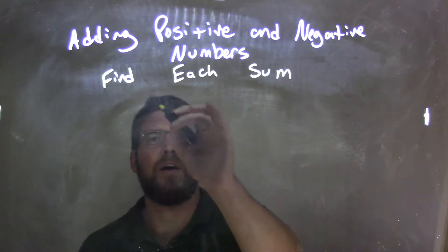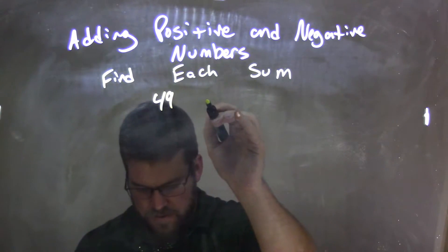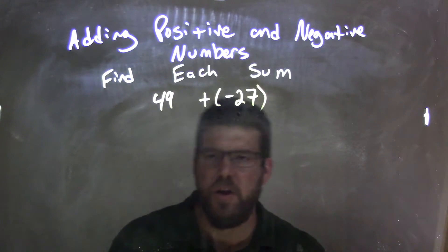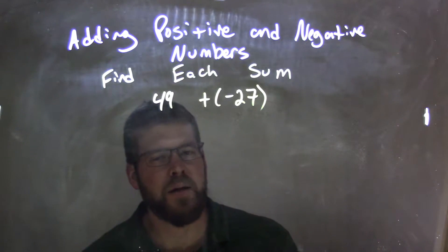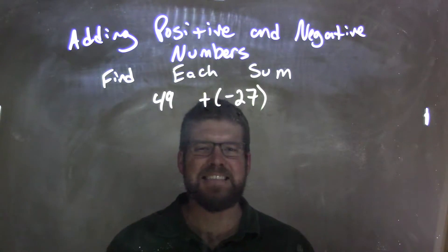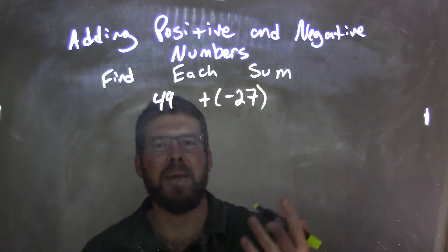So if I was given this expression, 49 plus a negative 27, we know that 49 plus a negative 27 is the same thing as 49 minus 27.